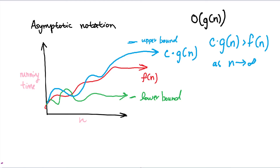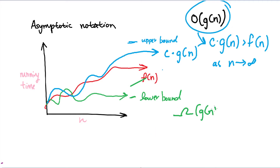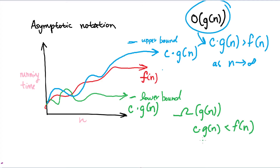The same concept applies for the lower bound, which we call uppercase Omega of some function g of n. Similarly, you can have some constant c multiplied by whatever function is inside — whether it's log of n, n, n squared, or n cubed — and it will form a lower bound for f of n. We can guarantee that c times g of n will be less than f of n as n approaches infinity.